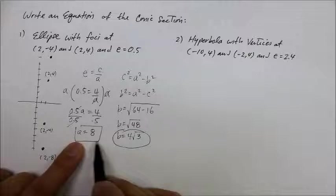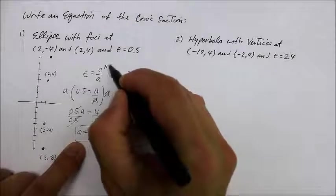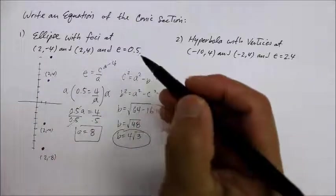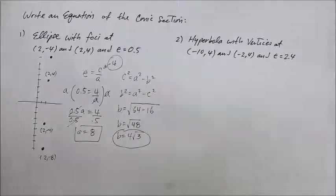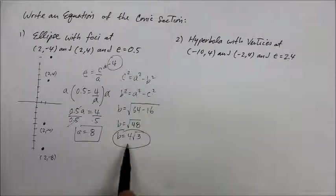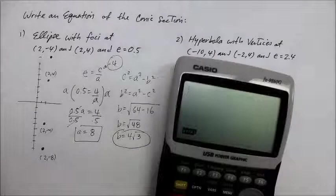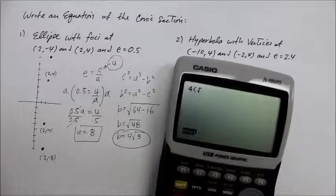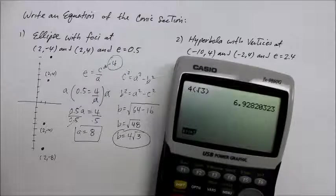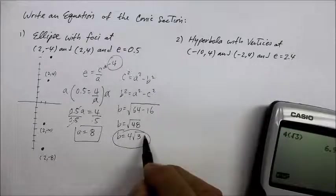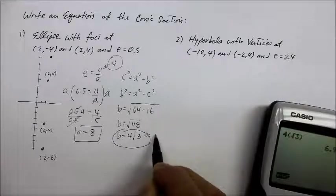So I have a, b, and c — with c being four units from the center to the focus. b is four square root of three, which equals approximately 6.928, so about 6.93 units from the center.